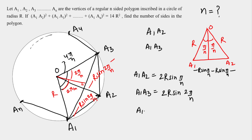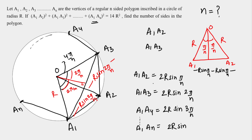Generalizing this pattern: for a1a4, the angle goes to 6π/n, giving 2R sin(3π/n). The pattern is clear: for a2 the multiplier is 1, for a3 it is 2, for a4 it is 3, so for a_n it will be (n−1). Therefore a1a_n = 2R sin((n−1)π/n). We now have all the chord lengths needed.